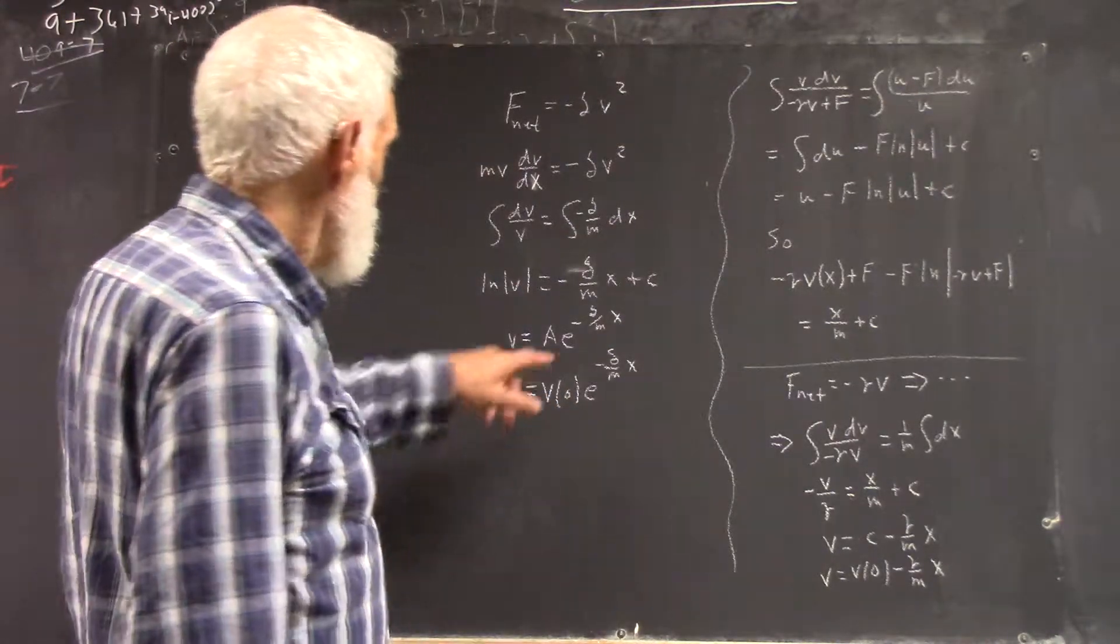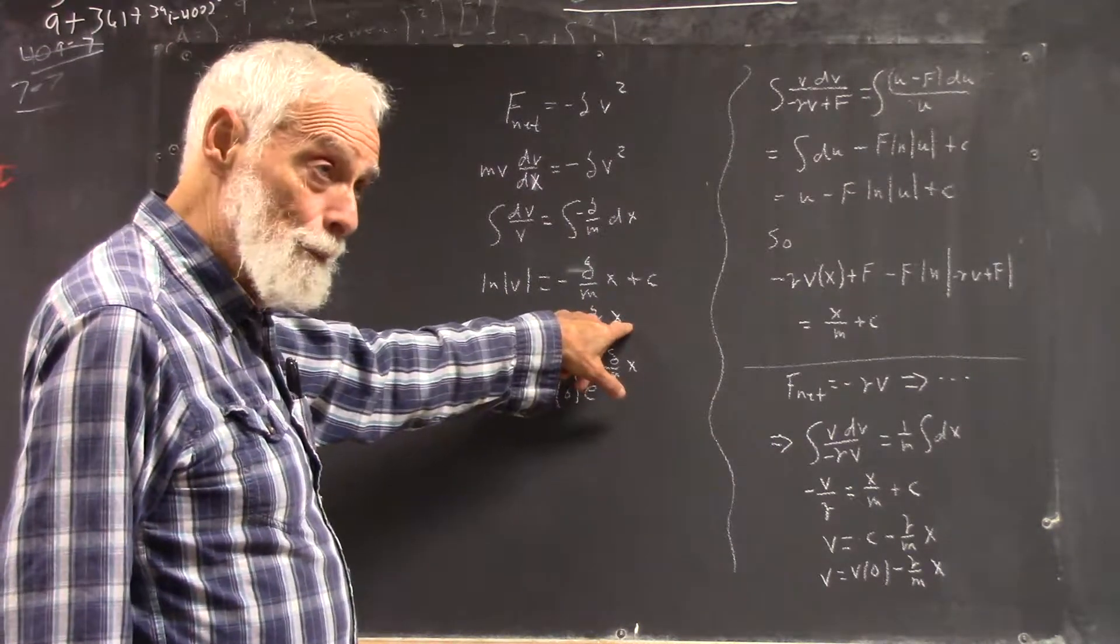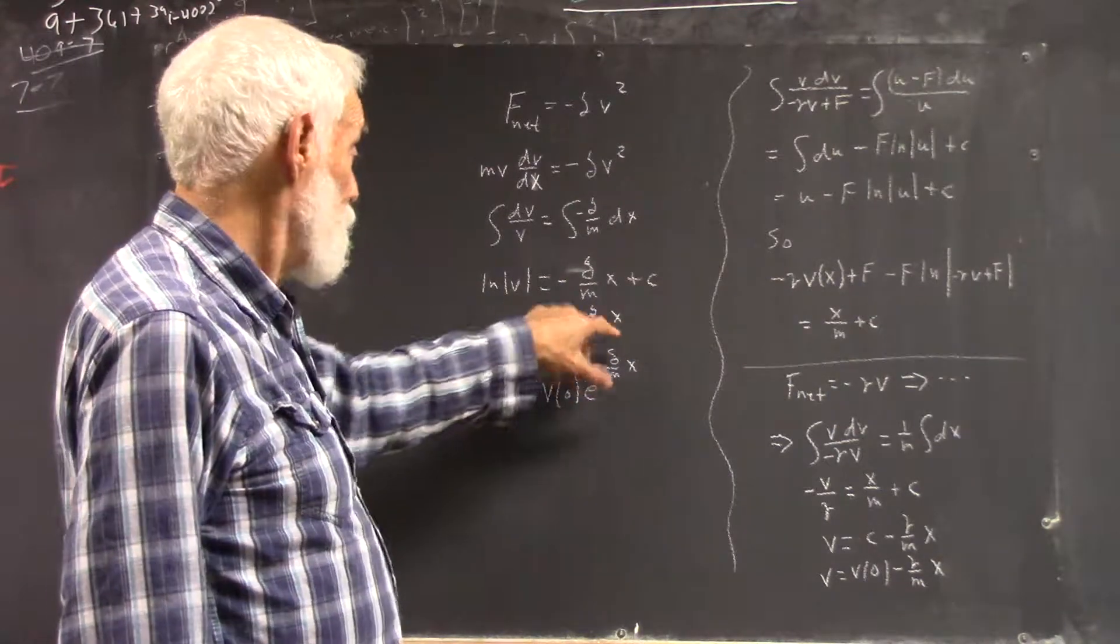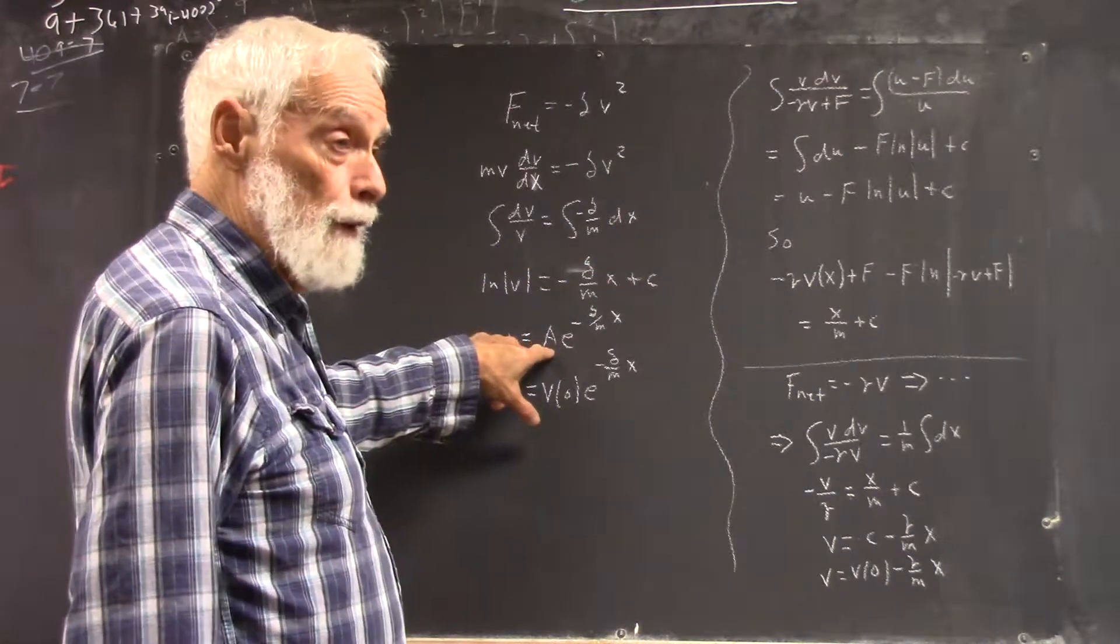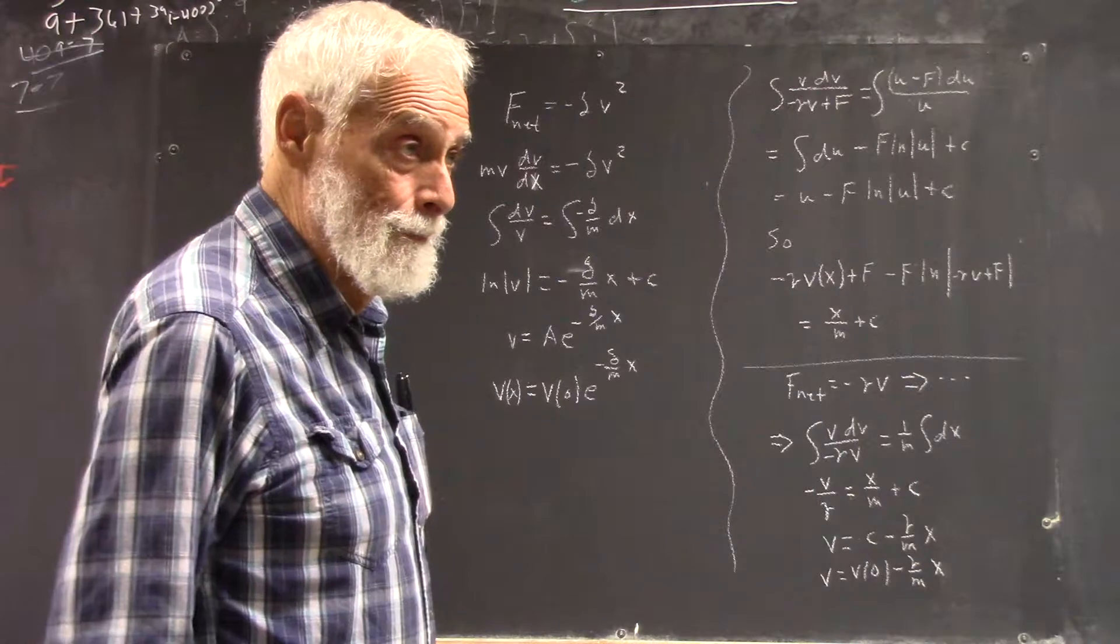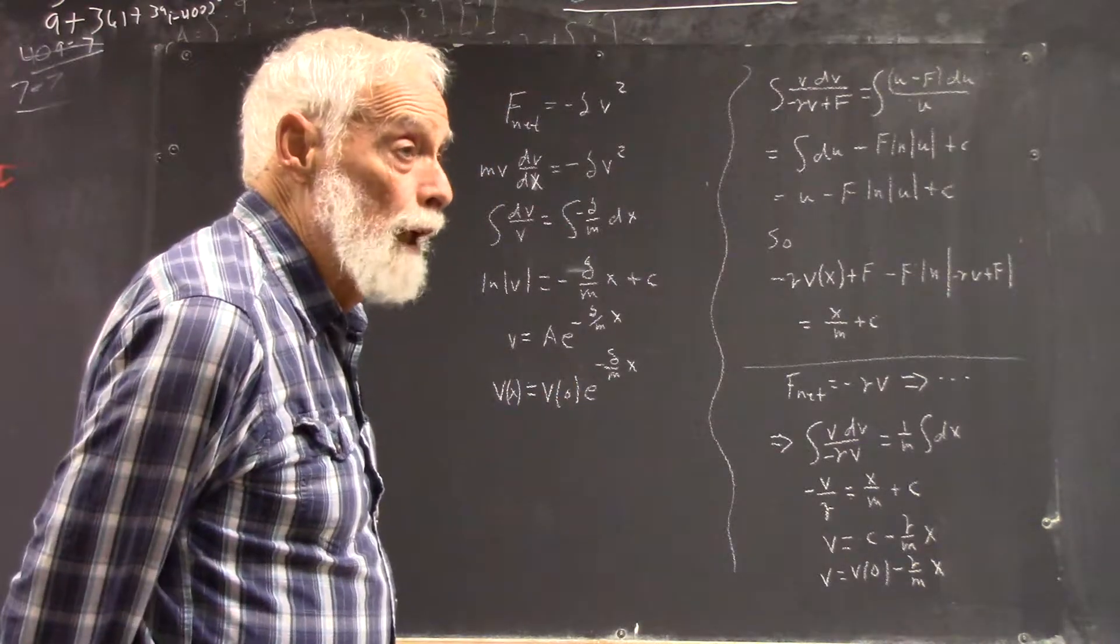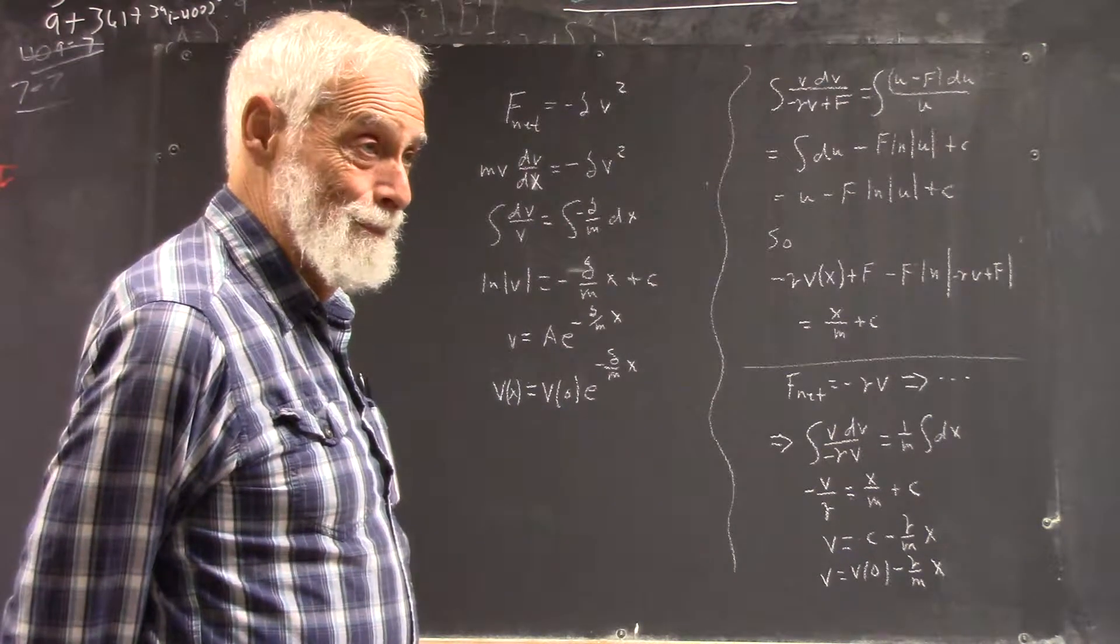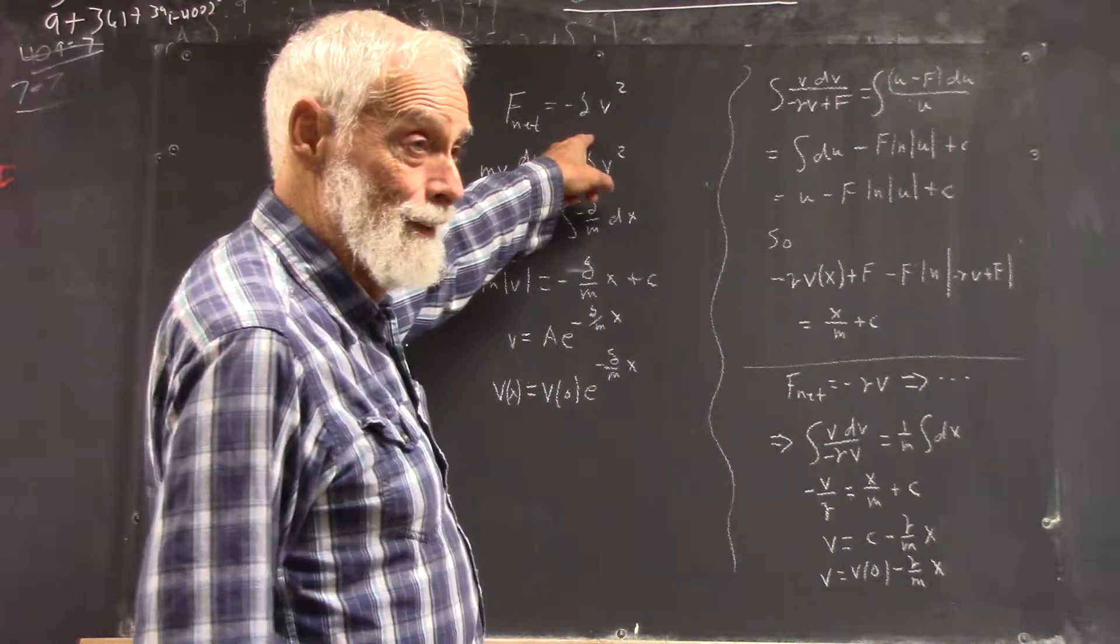Now, A has to be v of zero because when x is zero, you have to get v of zero. When x is zero, your exponential term is zero, and you're just left with A equals v of zero, so that's totally straightforward. So, that's two really common situations. It applies to me pushing off the wall, depending on whether we have this or this.